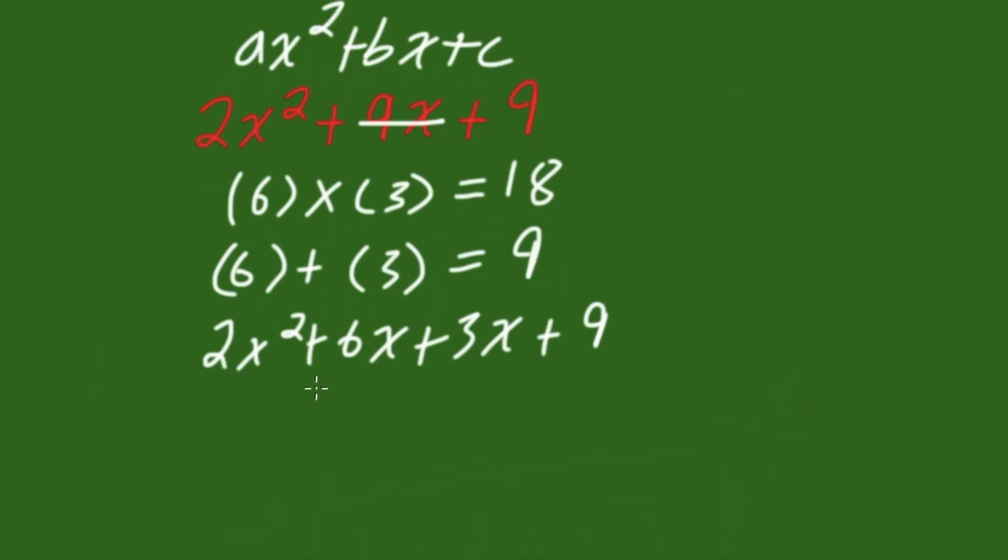So for this first section, we can see that the greatest common factor is 2x. So if we take 2x out the front, that goes into 2x squared, x times, and into 6x, 3 times.